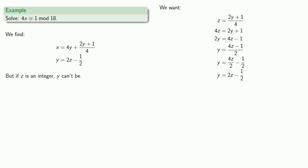Because if Z is an integer, Y can't be... Because Y is 2 times an integer minus 1 half, and that will keep it from being an integer. No problem, you say? Maybe Z isn't an integer.